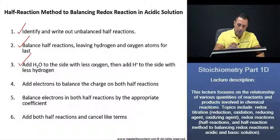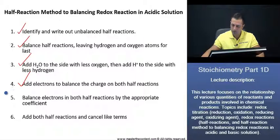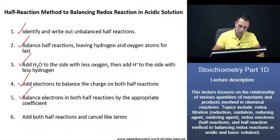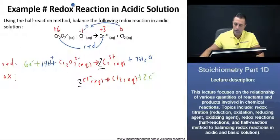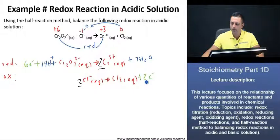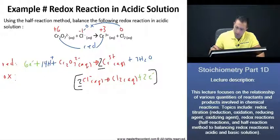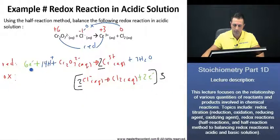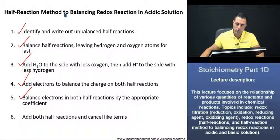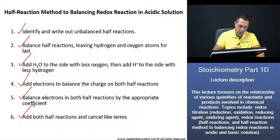Now, step 5: balance the electrons in both half-reactions by the appropriate coefficient. We have 6 electrons in the reduction reaction and 2 electrons in the oxidation reaction. In order to balance them, we place a coefficient of 3 on our oxidation half-reaction. Now our electrons are balanced — we have 6 electrons on each side. We can move to the last step: add both half-reactions and cancel like terms.